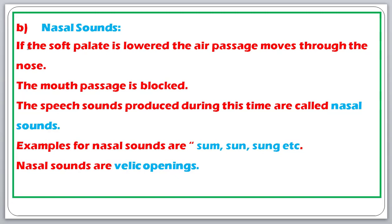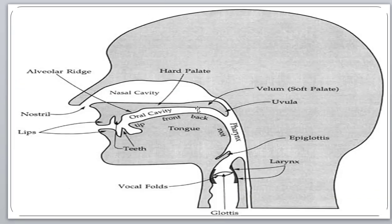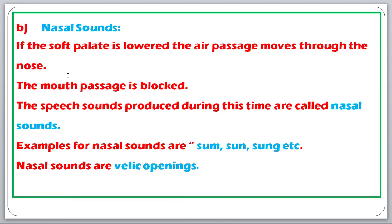If the soft palate is lowered, the air passage moves through the nose. Instead of rising up, the soft palate comes down — the mouth passage gets blocked and the air escapes through the nose. We call these nasal sounds. Examples include sounds like 'm', 'n', 'ng'. The mouth passage is blocked and the speech sounds produced are called nasal sounds.